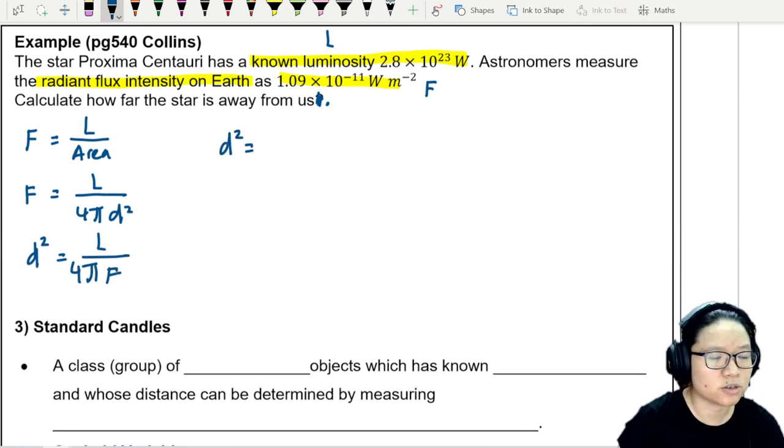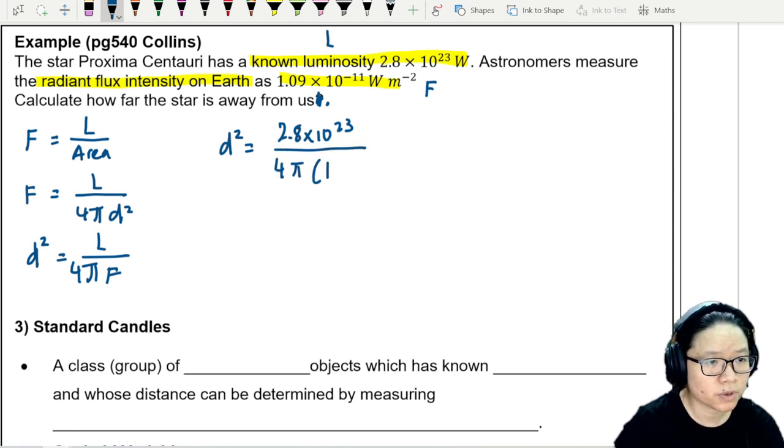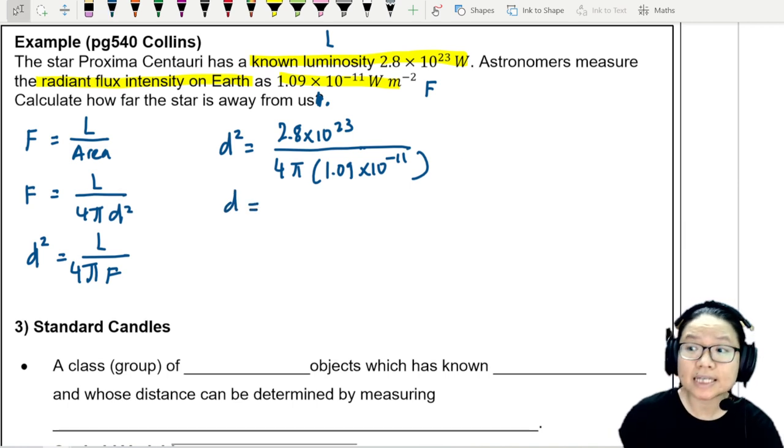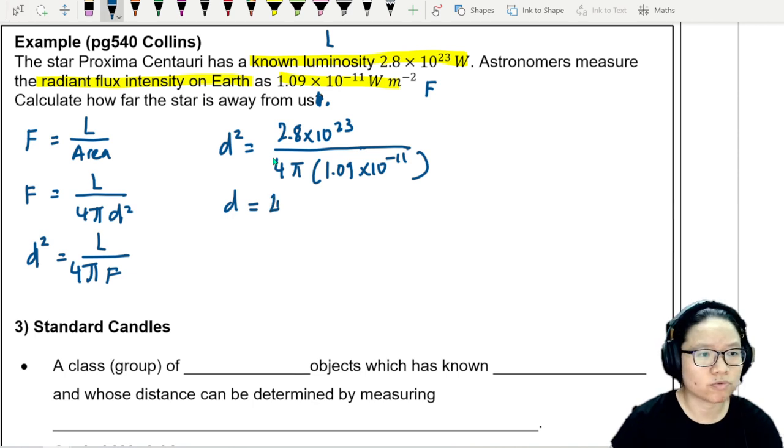So from here I'll get D² is equal to luminosity 2.8 × 10²³ divided by 4π × 1.09 × 10⁻¹¹. So just by pressing my good friend Casio the calculator carefully, I will be able to get D is equal to 4.52 × 10¹⁶ meter. Very far away, very far.